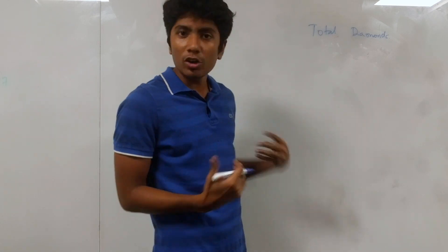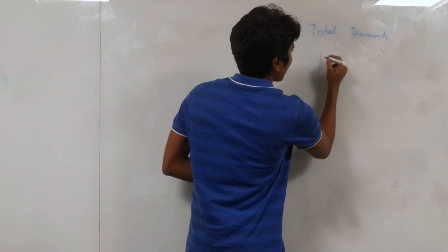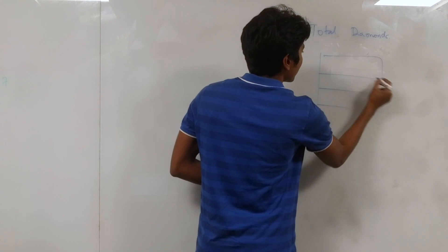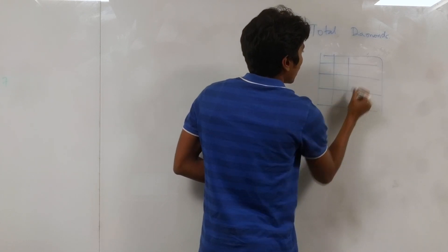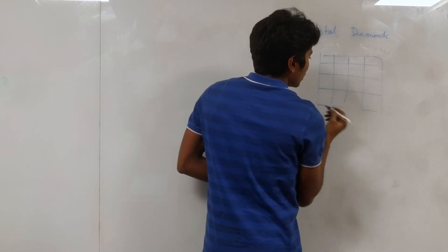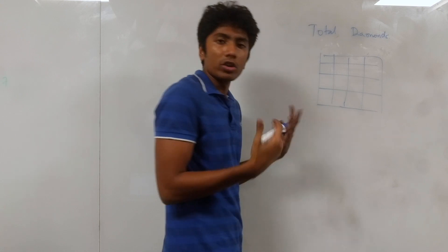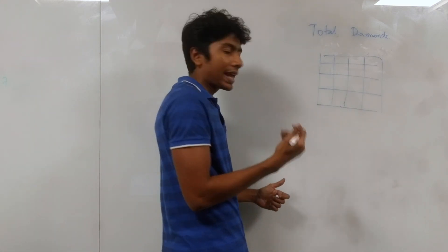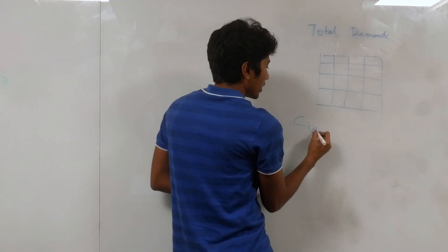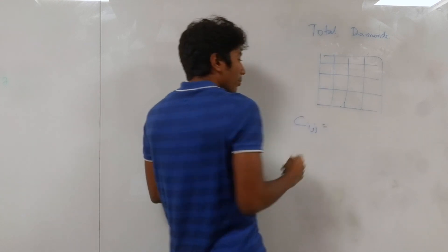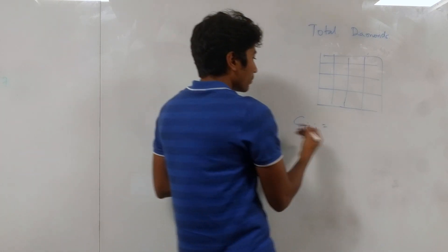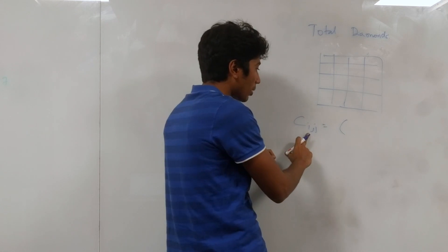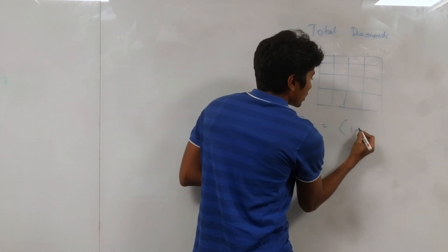You have an n×n grid given to you, and each cell in this grid contains diamonds. The diamonds aren't pre-given to you — you need to calculate the number of diamonds in each cell. For a cell (i, j), the number of diamonds is defined by the sum of the row number and the column number, that is i+j.